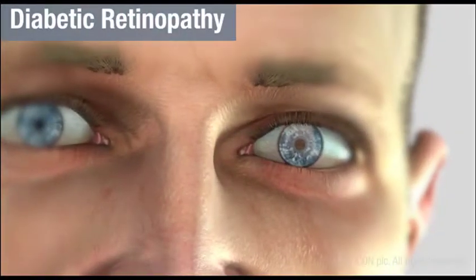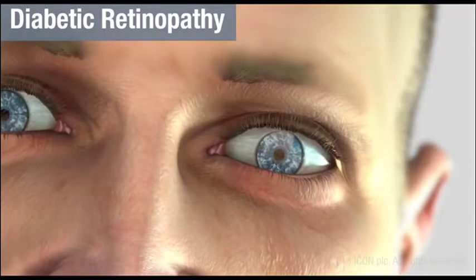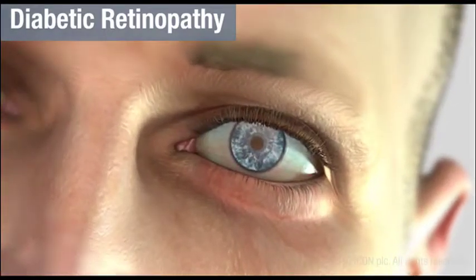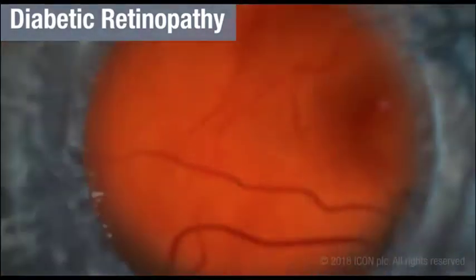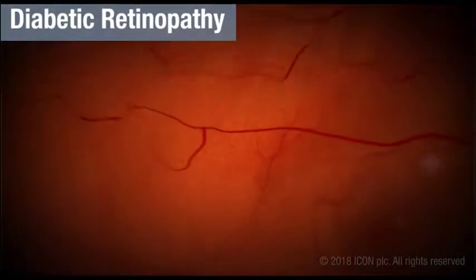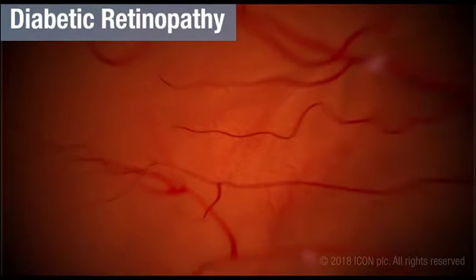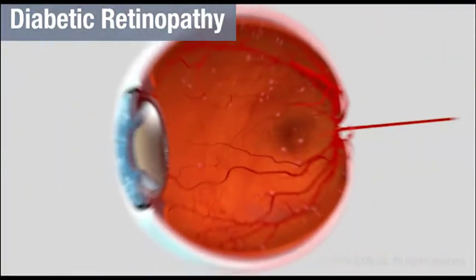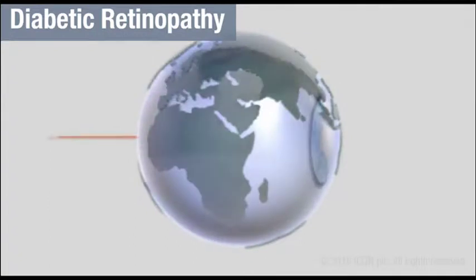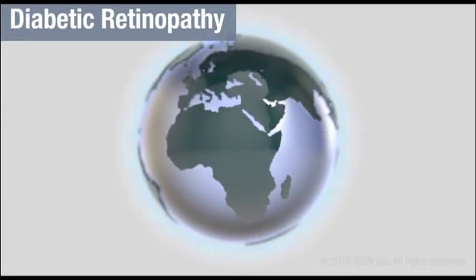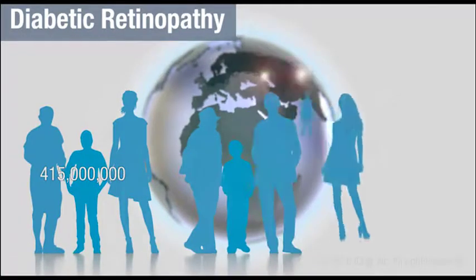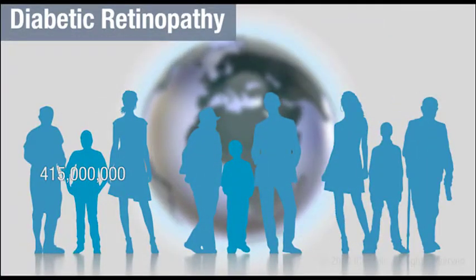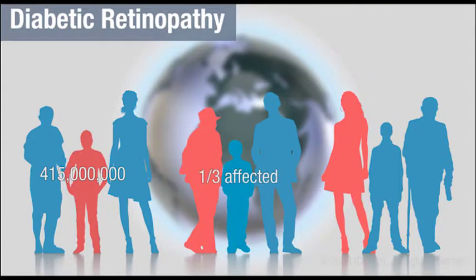Diabetic retinopathy is a common complication of diabetes which affects the eyesight of patients with both type 1 and type 2 diabetes. More specifically, diabetic retinopathy affects the small blood vessels at the back of the eye in a layer known as the retina. With the global prevalence of diabetes increasing rapidly, the number of diabetic complications is also on the rise. Of the 415 million people worldwide living with diabetes, it is expected that one third of those will be affected by diabetic retinopathy during their lifetime.